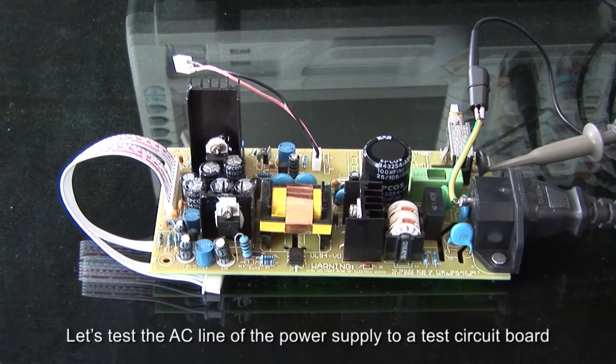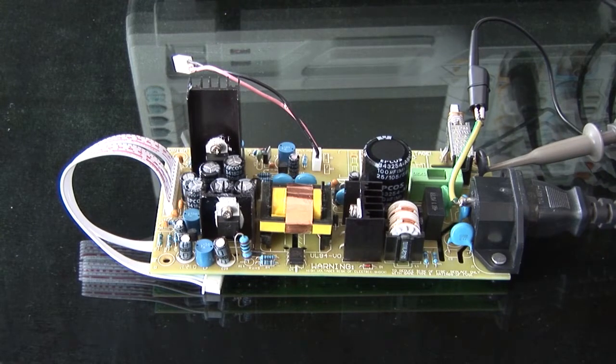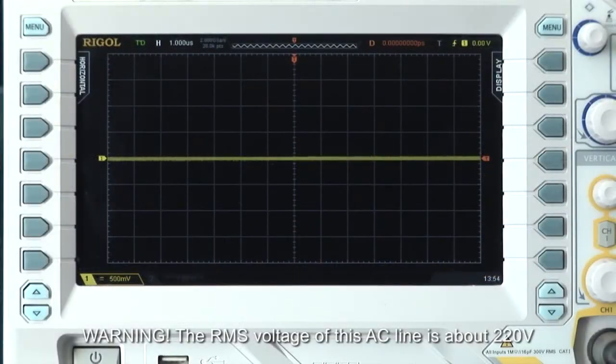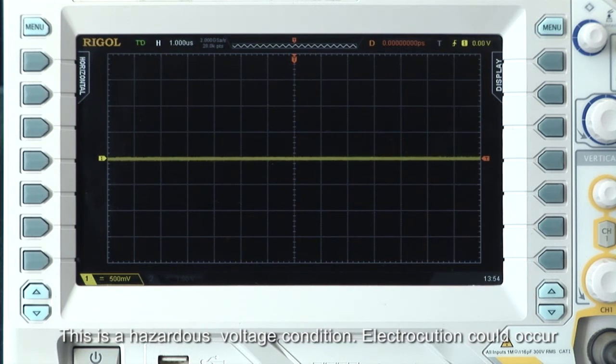Let's test the AC line of the power supply to a test circuit board. The RMS voltage of this AC line is about 220 volts. This is a hazardous voltage condition and electrocution could occur.